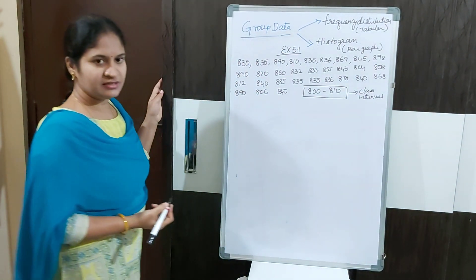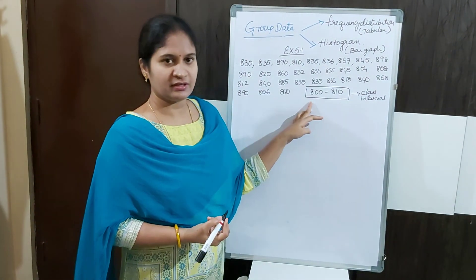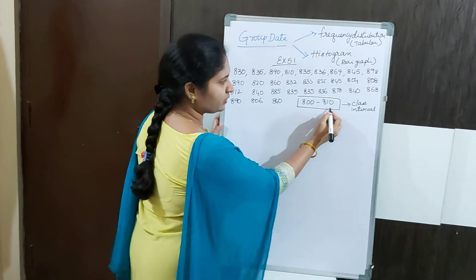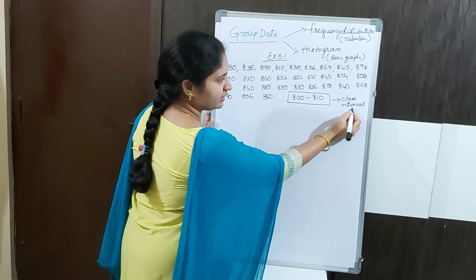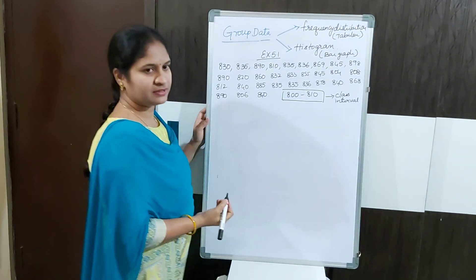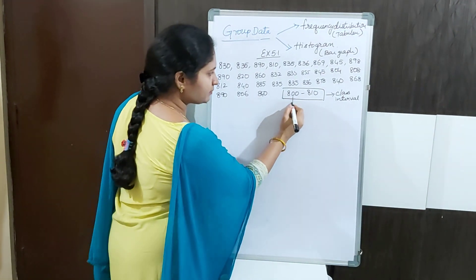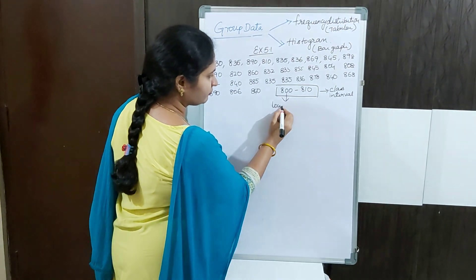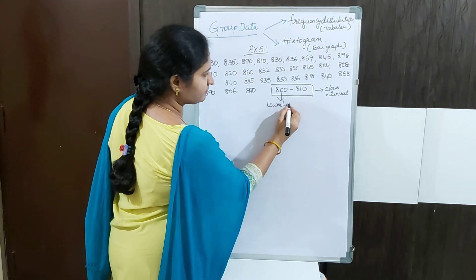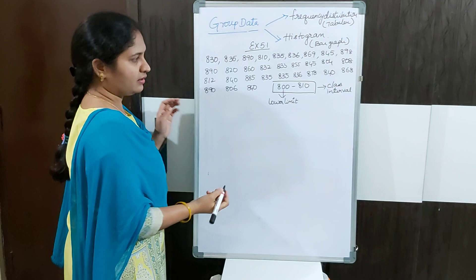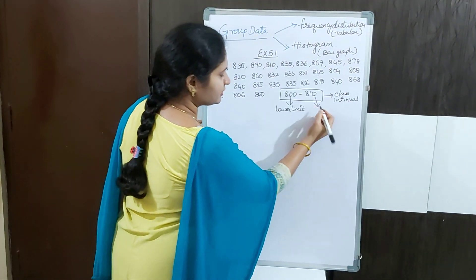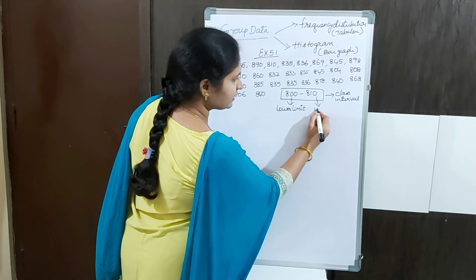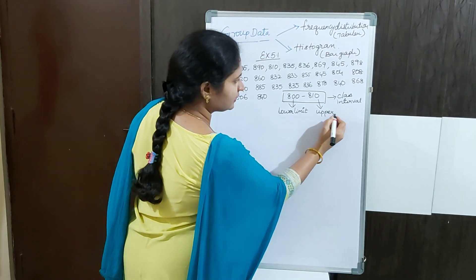This is new for you, so be careful and try to understand. This 800 to 810 is called a class interval. The first number, 800, we call the lower limit, and the larger number, 810, we call the upper limit.